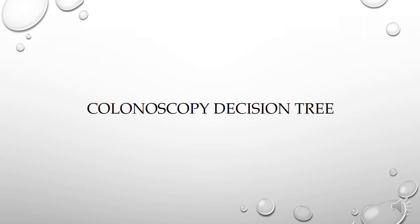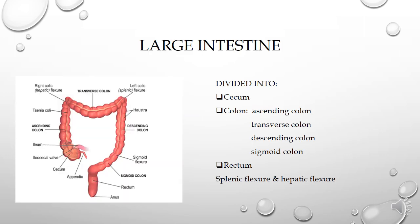So we will see what is colonoscopy decision tree. Before explaining the decision tree flowchart, let me explain anatomy. First one is about the large intestine. Here I have given a picture of the large intestine. Large intestine is mainly divided into three parts: cecum, colon, and rectum. Cecum is located next to the appendix.